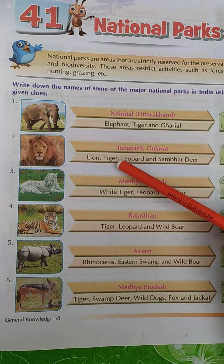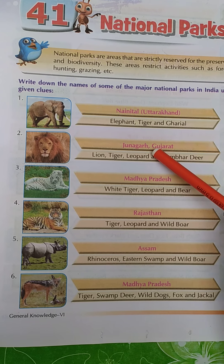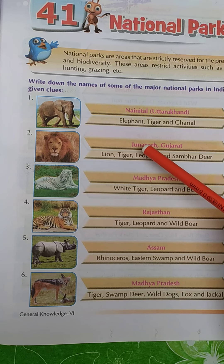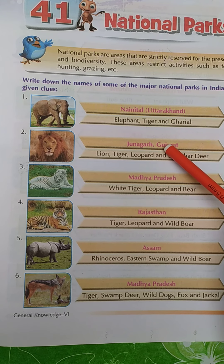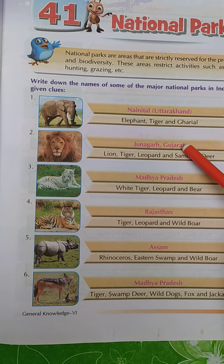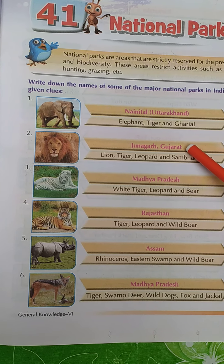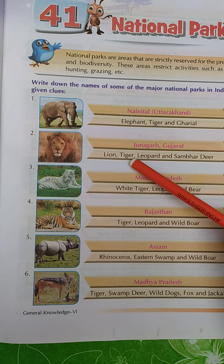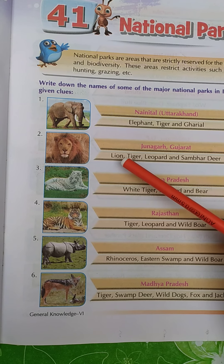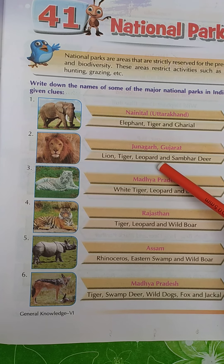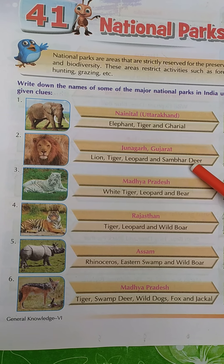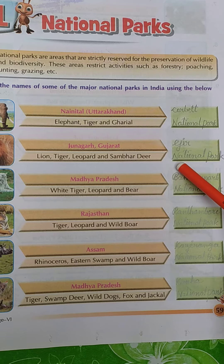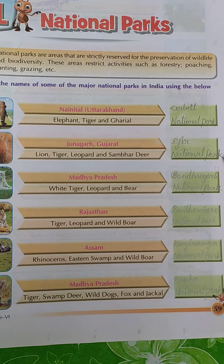Number two. This park is located in Junagadh, Gujarat. The animals in this park are lion, tiger, leopard, and sambar deer. The name of this national park is Gir National Park.